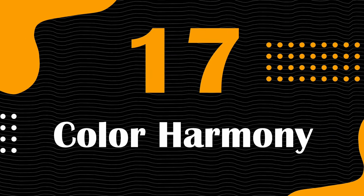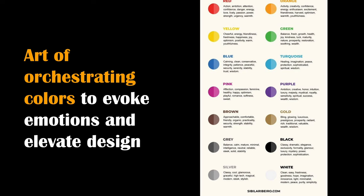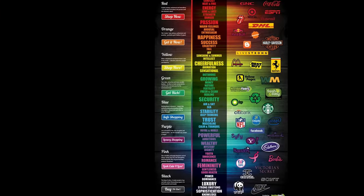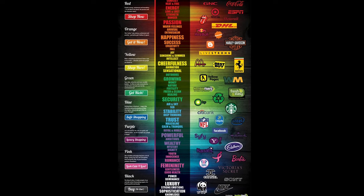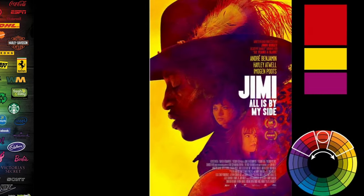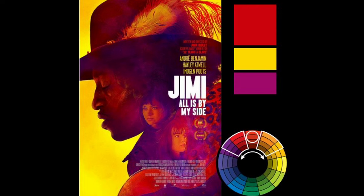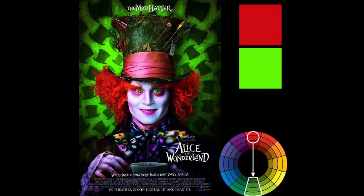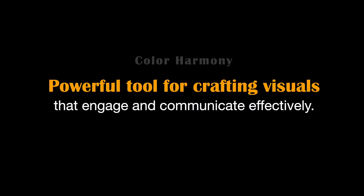Our next key term is color harmony — the art of orchestrating colors to evoke emotions and elevate design. It involves the skillful blending of colors to create a visually pleasing and emotionally resonant composition. Designers use color harmony to strike the right balance, ensuring that colors work together cohesively and elicit specific feelings — whether calm and serene with analogous colors, or vibrant and energetic with complementary ones. It's a powerful tool for crafting visuals that engage and communicate effectively.